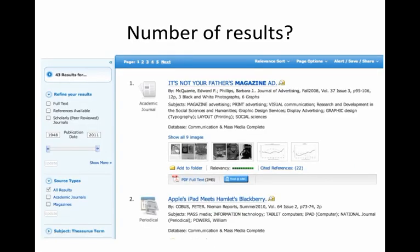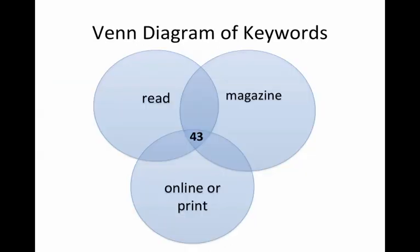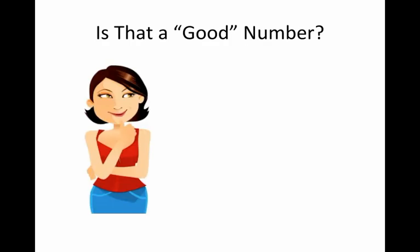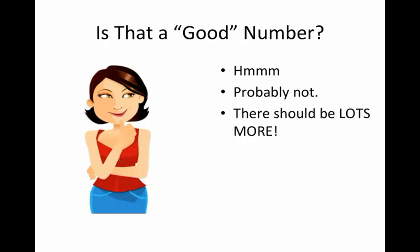So we did the search, and my first question to you is: how many results did we get? We got 43 results. The Venn diagram shows 43 results at the intersection of these three concepts. Is that a good number — 43 results for reading, magazines, print, online? I don't really think so. I think there should be a lot more, particularly in a database like Communication and Mass Media Complete.